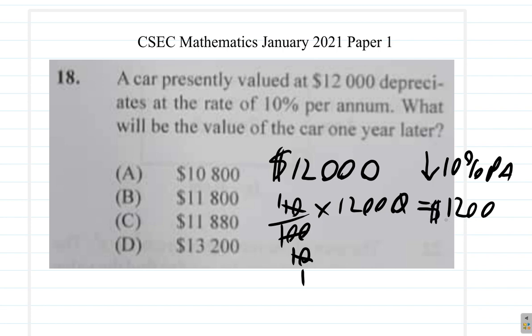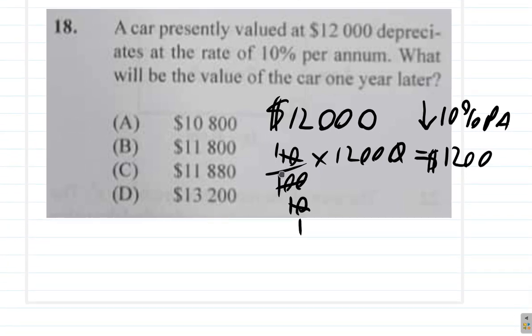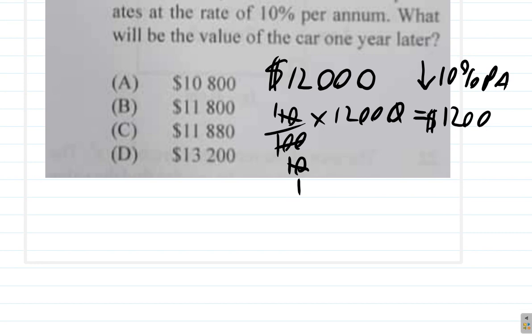It loses $1,200. Now here we have $12,000, it loses $1,200. So you have $12,000 minus $1,200.